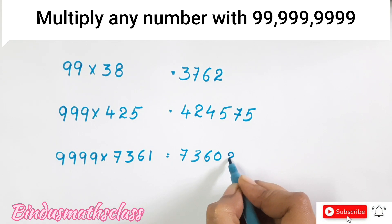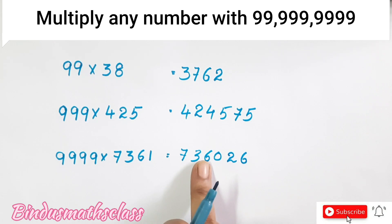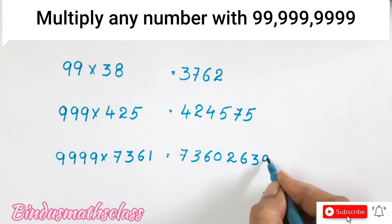Here 7 plus 2 is 9. 3 plus 6 is 9. 6 plus 3 is 9. And 0 plus 9 is 9. And your answer is 73,602639.